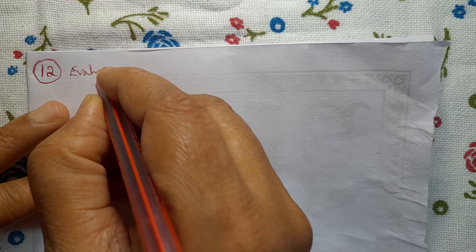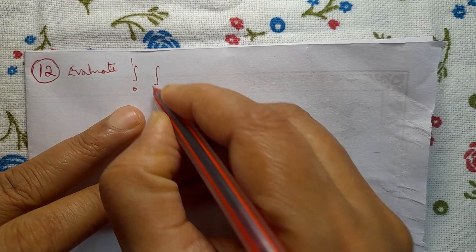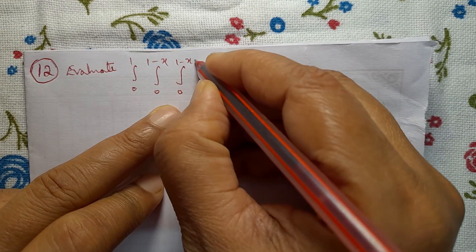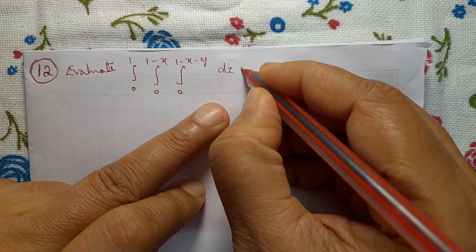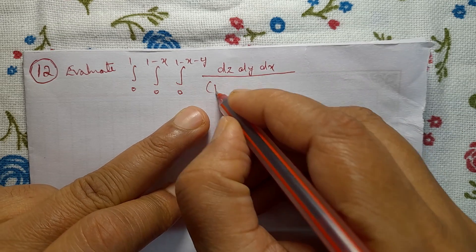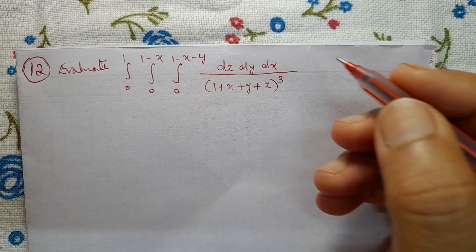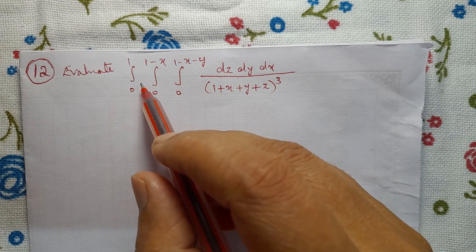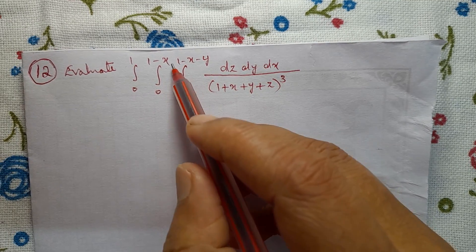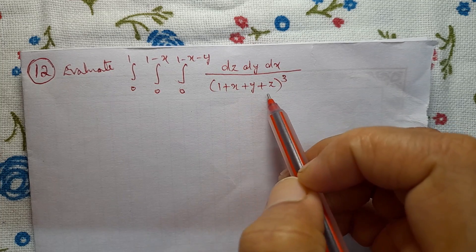Evaluate: integral from 0 to 1, integral from 0 to 1 minus x, integral from 0 to 1 minus x minus y, dz dy dx, divided by (1 + x + y + z) whole cube.